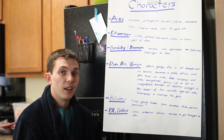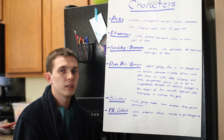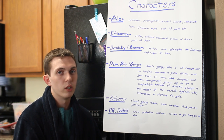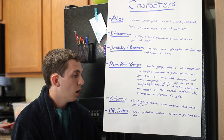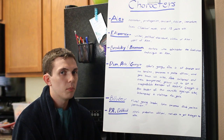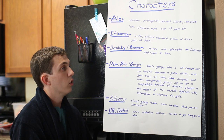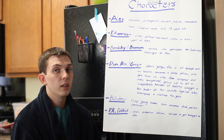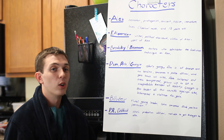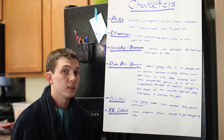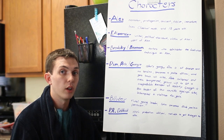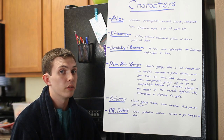Then there's P.R. Deltoid, Alex's probation officer. He kind of acts as the voice of reason for Alex and shows that society still wants to keep up its morals. But he never ends up getting through to Alex. Then there is the Minister of the Interior, who doesn't have a key role other than being the one that chooses Alex for the Ludovico technique. Then there is the prison chaplain, who shows Alex that man always has a choice, and if he doesn't, then he's no longer a man. But he ends up going along with the Ludovico technique, which contradicts his previous statement.